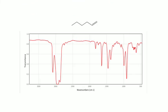Let's look at another one. This is the IR for 1-hexene. This wavelength at around 1650 is the carbon-carbon double bond. And this wavelength at 3100 corresponds to the vinyl hydrogen.